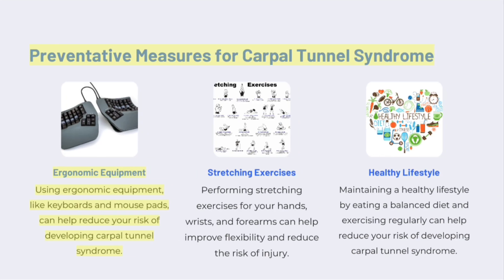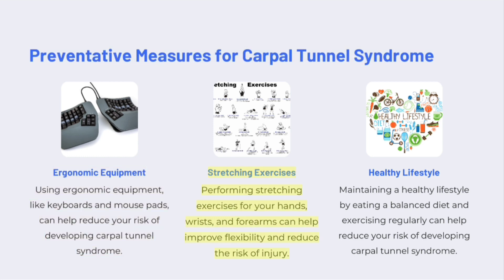Preventative Measures for Carpal Tunnel Syndrome. Ergonomic Equipment: Using ergonomic equipment, like keyboards and mouse pads, can help reduce your risk. Stretching Exercises: Performing stretching exercises for your hands, wrists, and forearms can help improve flexibility and reduce the risk of injury. Healthy Lifestyle: Maintaining a healthy lifestyle by eating a balanced diet and exercising regularly can also help reduce your risk.